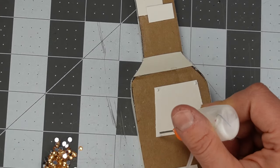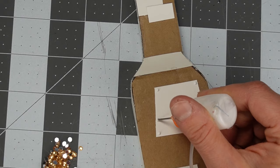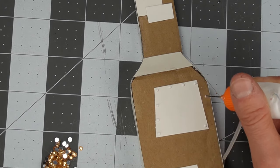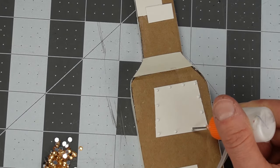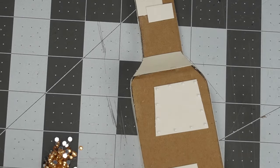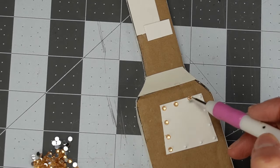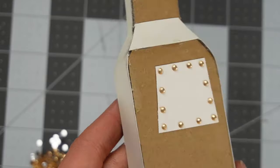The jewels I'm using as rivets are not adhesive backed so I used my squeeze bottle to lay down some glue. I used a bit of wax on my Dollar Tree stylus to pick up the jewels and drop them in the glue.